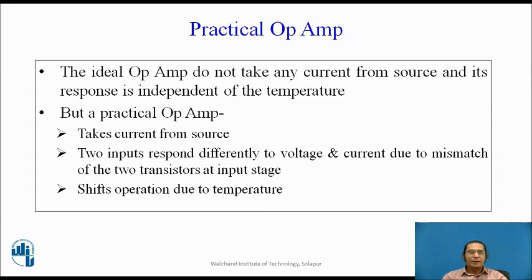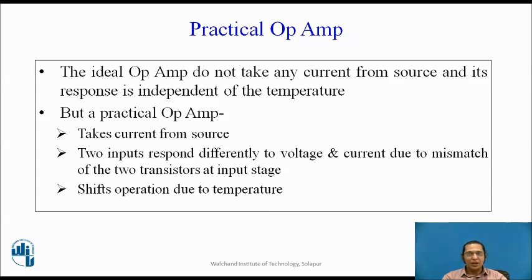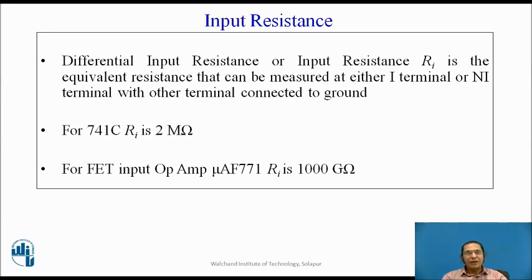Although we assume that an ideal op-amp does not take any current from the source and its response is independent of temperature, as far as the practical op-amp is concerned, three things happen. First, a practical op-amp takes current from its source. Second, the two inputs — non-inverting and inverting — respond differently to voltage and current due to mismatch of the two transistors at the input stage. Most importantly, the operation of the op-amp is dependent on temperature.